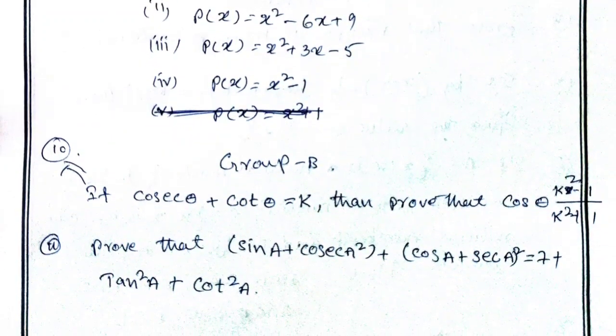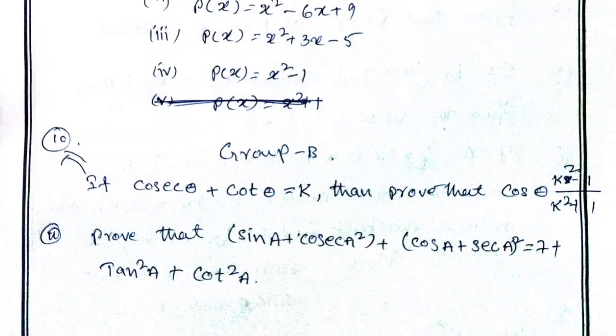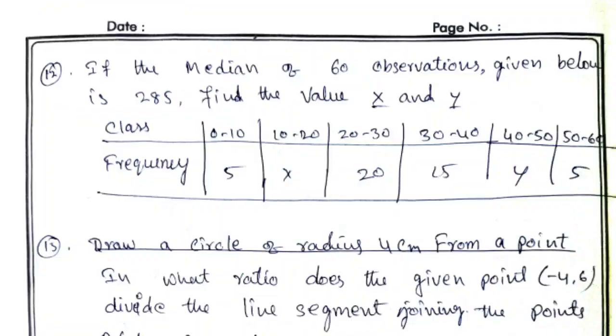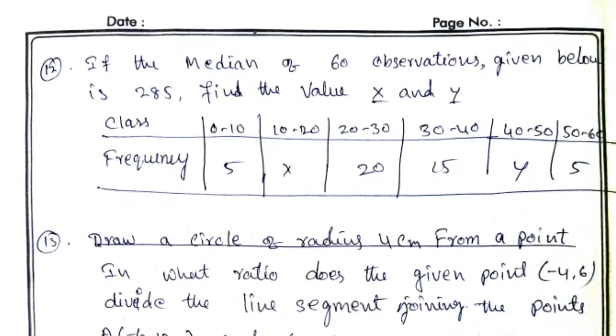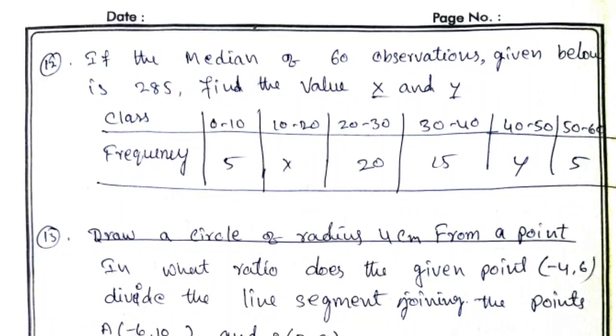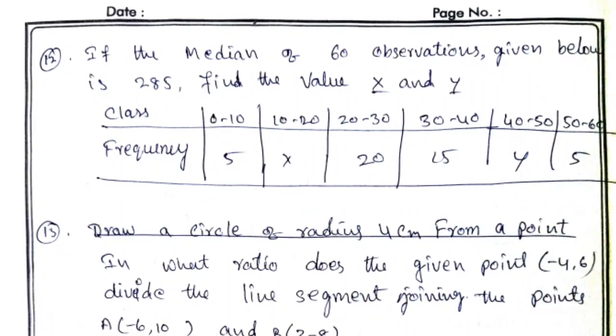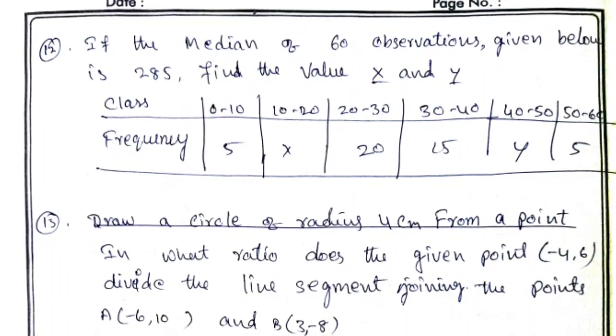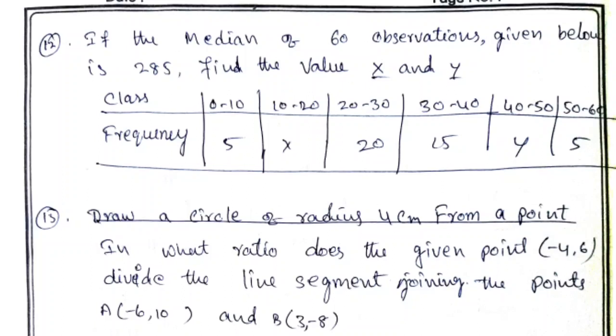Is equal to 7 plus tan square A plus cot square A. These two questions are very practical, 99.99 percent. Statistics are very practical. Especially basic questions. What's the mean, median, mode. You write the data.